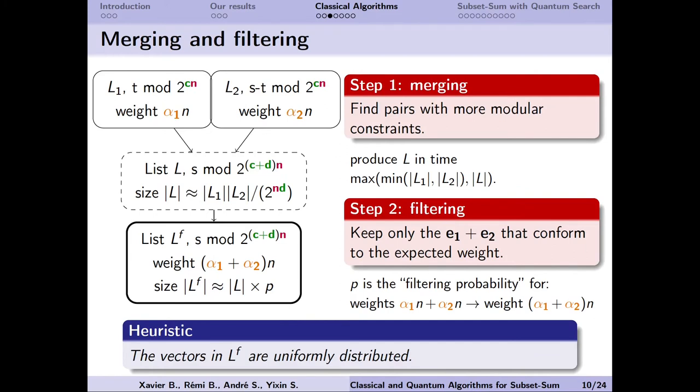We merge solutions with respect to a bigger modulo, and then we filter the results to keep those of expected Hamming weights. If the lists L1 and L2 are uniformly distributed, then the result of the merge is also uniformly distributed if the previous modulo is a divisor of the new modulo. We can also compute the expected number of merged solutions. However, it is not clear that the filtering process produces also a uniformly distributed list. Here we make use of a standard heuristic in the field that says that the filtered list is indeed uniformly distributed.